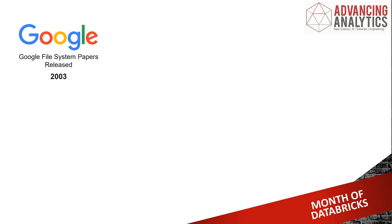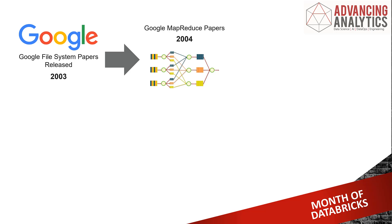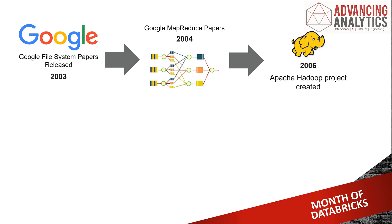They followed it up with a thing called MapReduce in the MapReduce papers, essentially doing the same for compute — taking a compute query, some kind of analytics aggregation, and spreading that workload across a load of cheap computers, each of which is talking to our Hadoop File System. These two things together mean you can have an incredibly large scale system without specialist hardware, and it became a thing called Apache Hadoop.